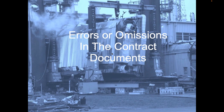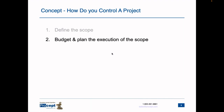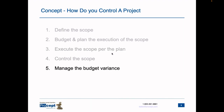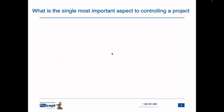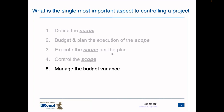The first issue is errors or omissions in contract documents. From my perspective, this starts in the design office. We'll look at some basic project management to understand how projects are developed, which leads to how well the contracts are written. To control a project, you define the scope, plan the execution, execute with the plan, control the scope, and manage budget variances. The single most important aspect of controlling a project is scope. If you have poor scope, no matter how well-written your contract documents are, you'll have a lot of trouble in the field.